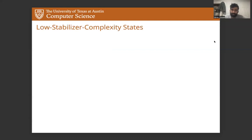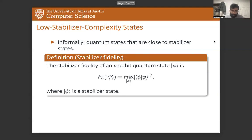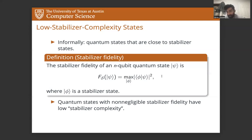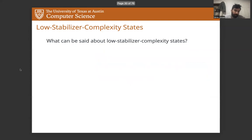So that brings us to low stabilizer complexity states. Informally, these are quantum states that are in the neighborhood of stabilizer states. The way we formalize this is with the stabilizer fidelity. The stabilizer fidelity of an N qubit state psi is the maximum overlap that psi has with any stabilizer state phi. And we refer to quantum states that have non-negligible stabilizer fidelity as having low stabilizer complexity. So low stabilizer complexity means that a state is close to a stabilizer state in terms of stabilizer fidelity. So given that stabilizer states have found many applications in quantum computing and are very well understood, what can be said about low stabilizer complexity states?